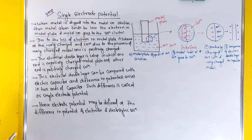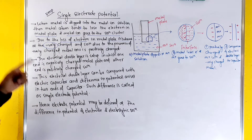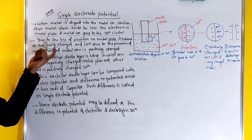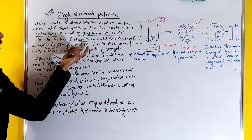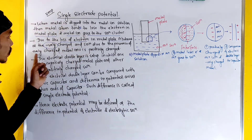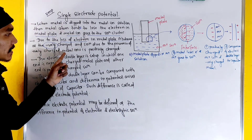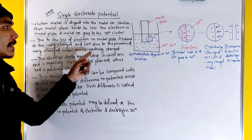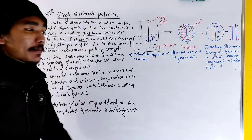Due to the loss of electrons, the metal plate behaves as negatively charged, and the solution, due to the presence of positively charged metal ions, becomes positively charged.